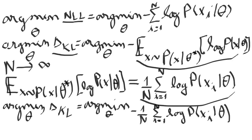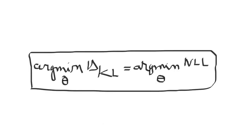Because constants do not affect the argmin, we can remove the 1 over n factor. By doing that, we obtain exactly the negative log likelihood minimization. So finally, minimizing the negative log likelihood of our estimated data distribution is equivalent to minimizing the KL divergence between the true data distribution and our estimated distribution.